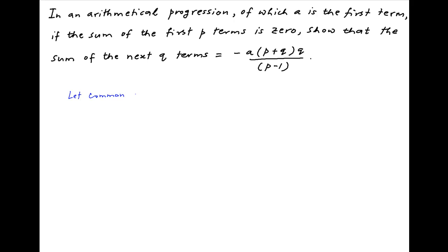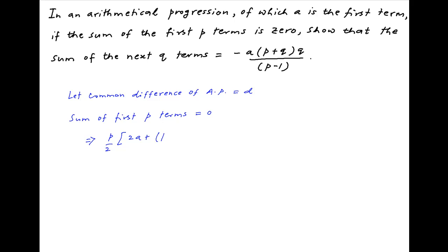Let's start by assuming that the common difference of the arithmetic progression is equal to d. We are given that the sum of the first p terms is equal to 0. The sum of the first p terms is equal to p upon 2 times (2a plus p minus 1 times d), and this equals 0. It follows that 2a plus (p minus 1)d equals 0, and therefore d equals minus 2a divided by (p minus 1).